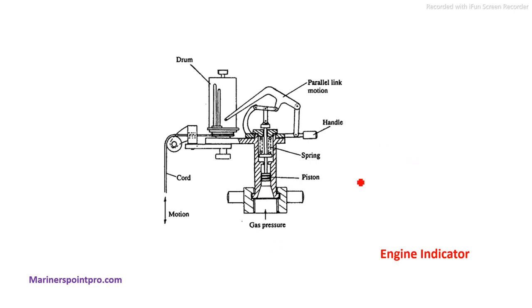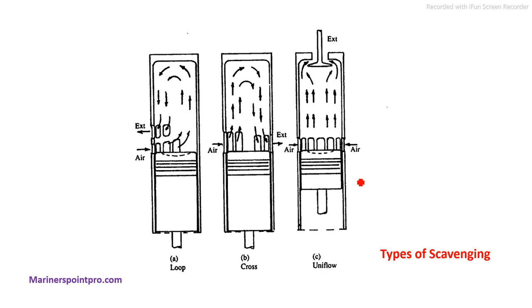Next are the types of scavenging. There are three types of scavenging in an engine: loop scavenging, cross scavenging, and uniflow scavenging. In loop scavenging, the inlet and exhaust ports are on the same side of the cylinder and the air forms a loop. In cross scavenging, the inlet and exhaust ports are at diametrically opposite ends. In uniflow scavenging, we have inlet ports but for exhaust we have exhaust valves.